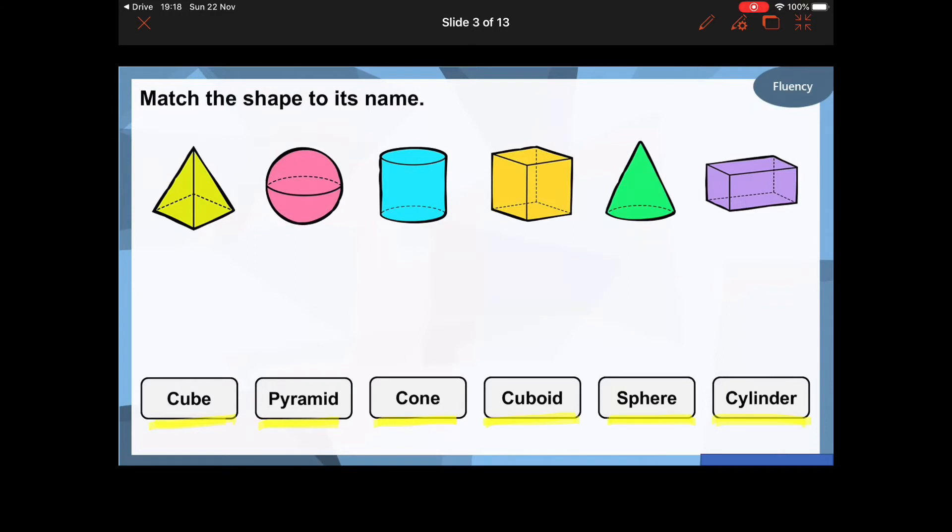Okay, so hopefully you've had a good go at that and here are the names of those shapes. We've got the pyramid. A good way of remembering this is a bit like the pyramids in Egypt, so we know they have a pointy top and triangle sides. This one is called a sphere. A sphere is like a globe or a football shape.